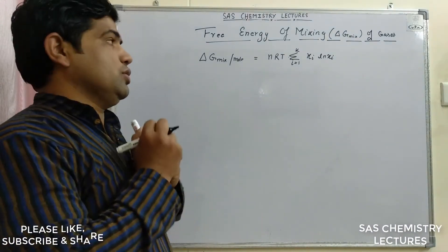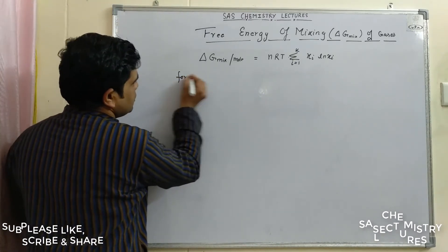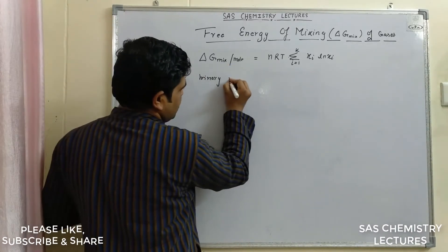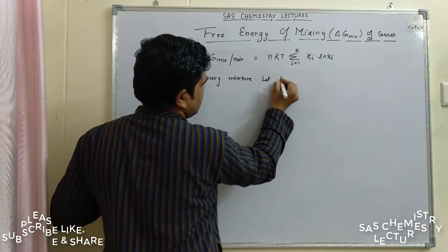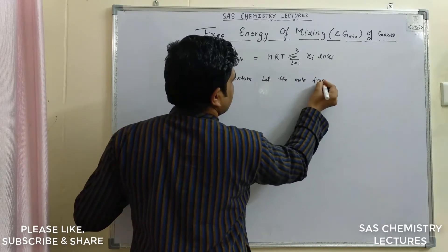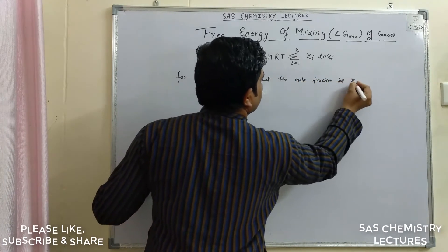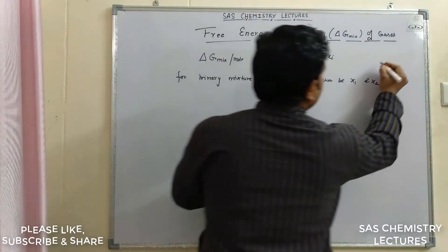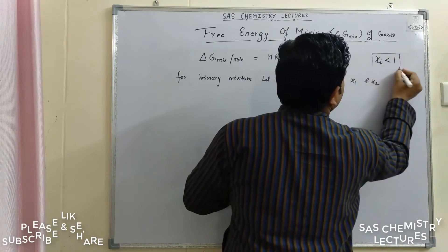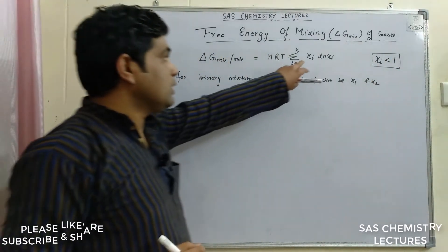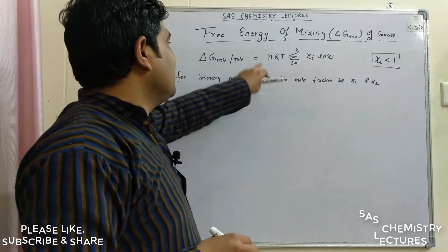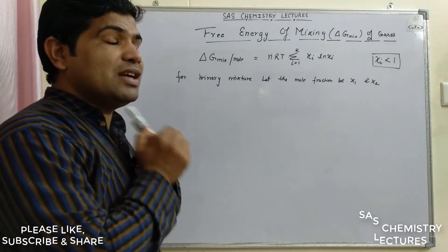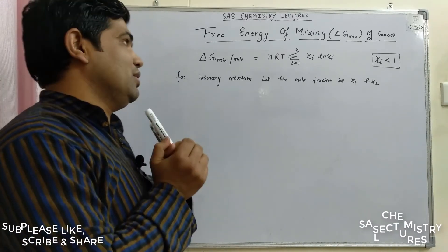For a binary mixture, we have two mole fractions x1 and x2. One important thing to remember is that the value of x_i is always less than one. This means the summation of all x_i ln x_i terms is negative, so ΔG_mix is negative. A negative ΔG_mix means the process is spontaneous or feasible — so the mixing of gases is a spontaneous process.